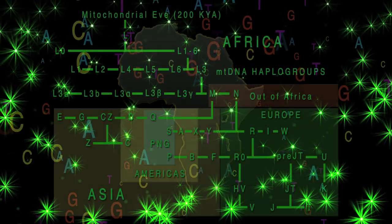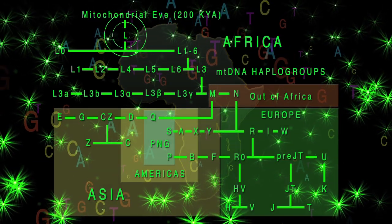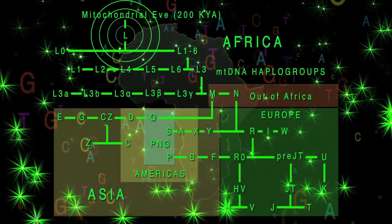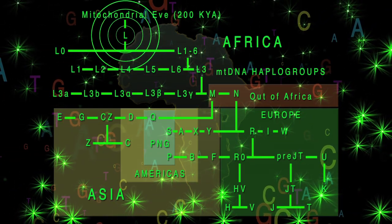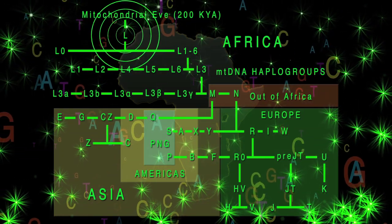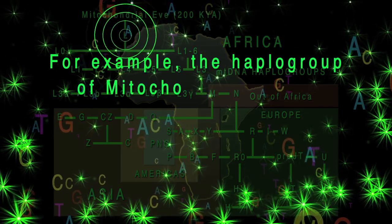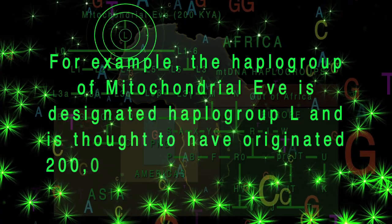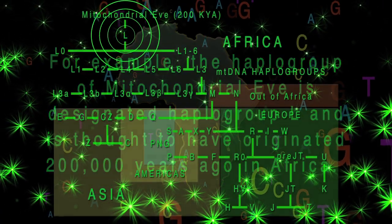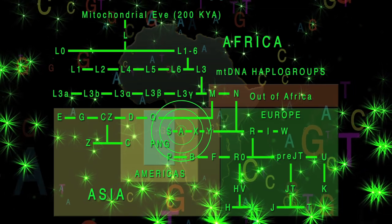Looking at the diagram of the mitochondrial haplogroups, the oldest mitochondrial haplogroup is L. Mitochondrial haplogroups are designated using the letters A through Z, similar to the Y chromosome haplogroups, but named in the order of discovery rather than chronologically. For example, the haplogroup of mitochondrial Eve is designated haplogroup L, thought to have originated around 200,000 years ago in Africa, whereas mitochondrial haplogroup A is largely found from Eastern Asia into the Americas.